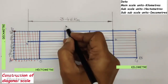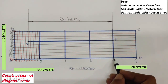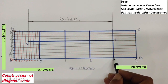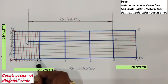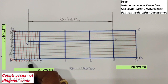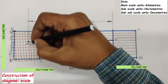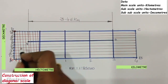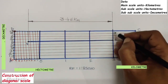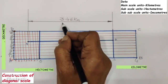To mark 3.46 km on the scale: from 0, take 3 units on the main scale — each unit represents 1 km, so this gives 3 km. Then from 0 in the leftward direction, take 4 units on the subscale, each representing 1 hectometer, giving 4 hectometers. Along the diagonal line at the 4-hectometer mark, move up to the 6th division and mark this point as P. Draw a horizontal through P; that horizontal cuts the perpendicular drawn at 3 km. Name this intersection point Q. The line PQ represents 3.46 km.